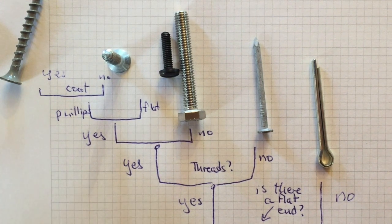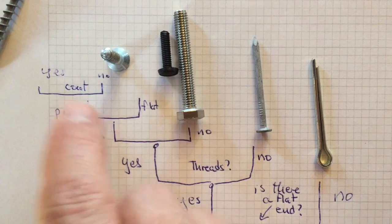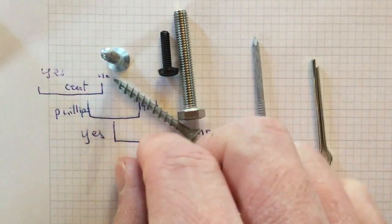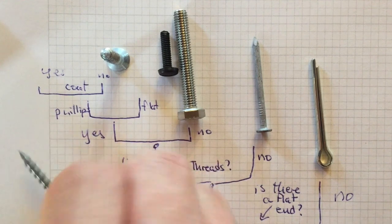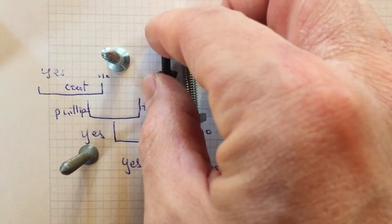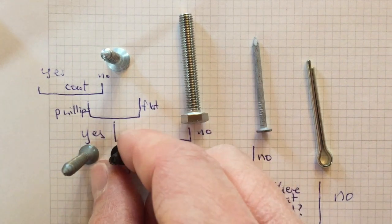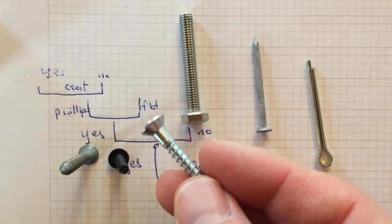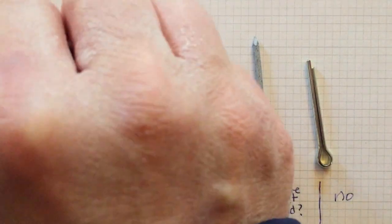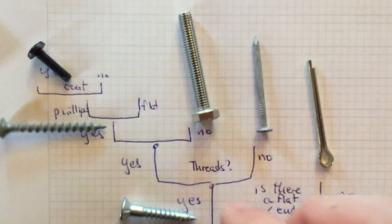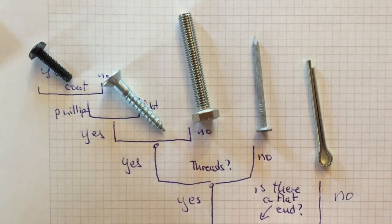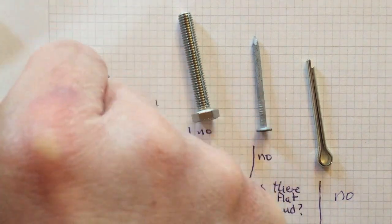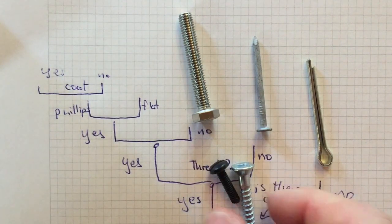If we ask these questions in a different order, we could come up with a very different grouping. For example, if we ask about coating earlier — instead of asking about Phillips head versus flat head — we'd be grouping the all-weather screw with the plastic-coated flat head screw, and the other one would be the outlier. So the order in which we ask these questions is really important, and so are the questions themselves.